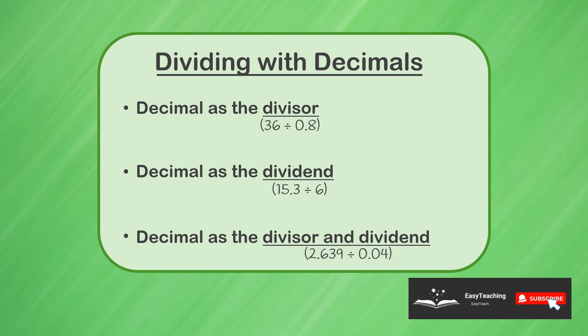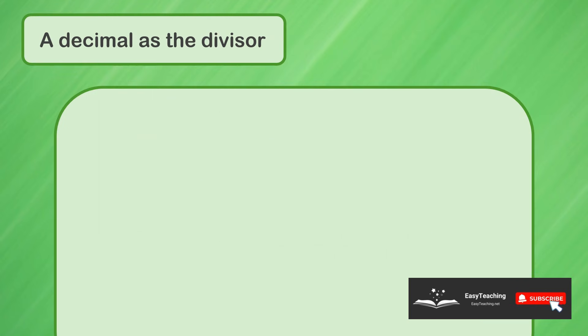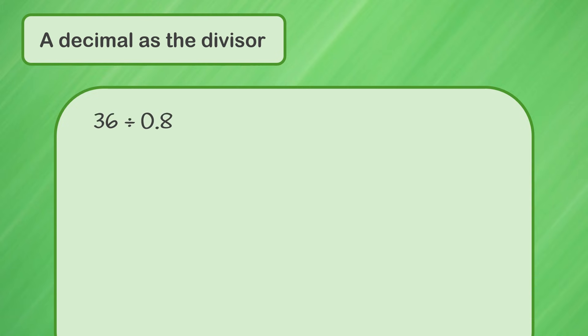We'll start with a problem where the divisor is a decimal. The division problem we'll work through is 36 divided by 0.8. The very first step when we're dividing with decimals is to check to make sure the divisor is a whole number. The divisor is the number that we're dividing by. In this problem our divisor is not a whole number. It's 0.8.